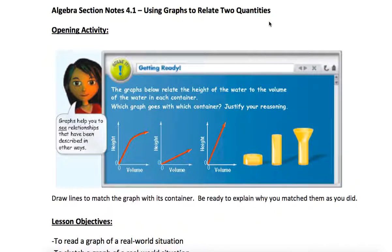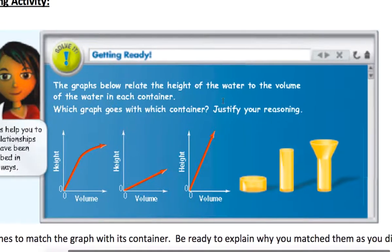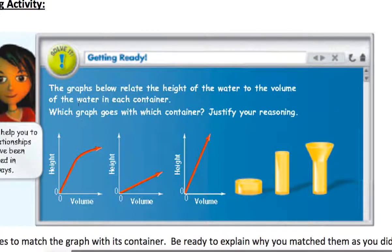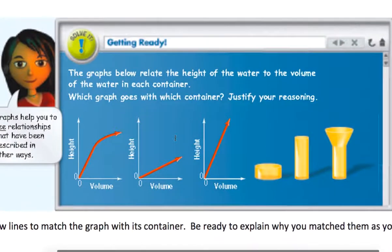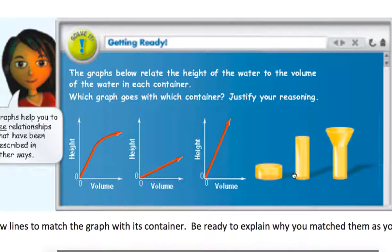With this opening activity seen here, the graphs below relate the height of the water to the volume of the water in each container. Which graph goes with which container? Justify your reasoning. We see three graphs and three containers here, so trying to match. Each container is holding different volumes, meaning how much water you could fill in one is going to be different than the next container.